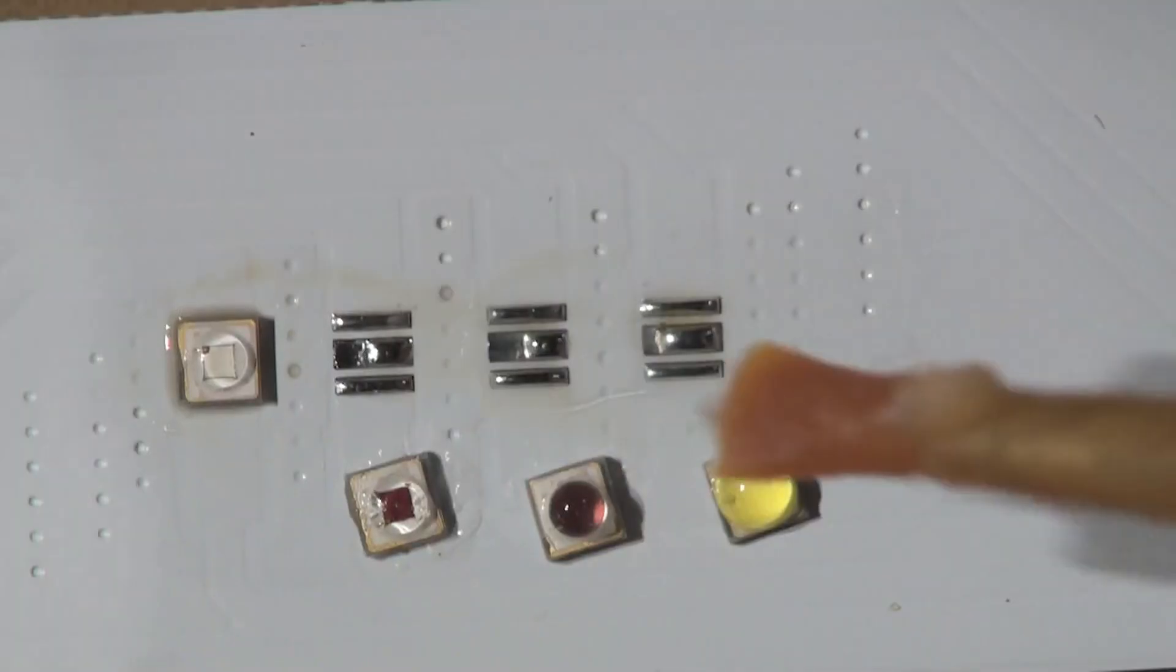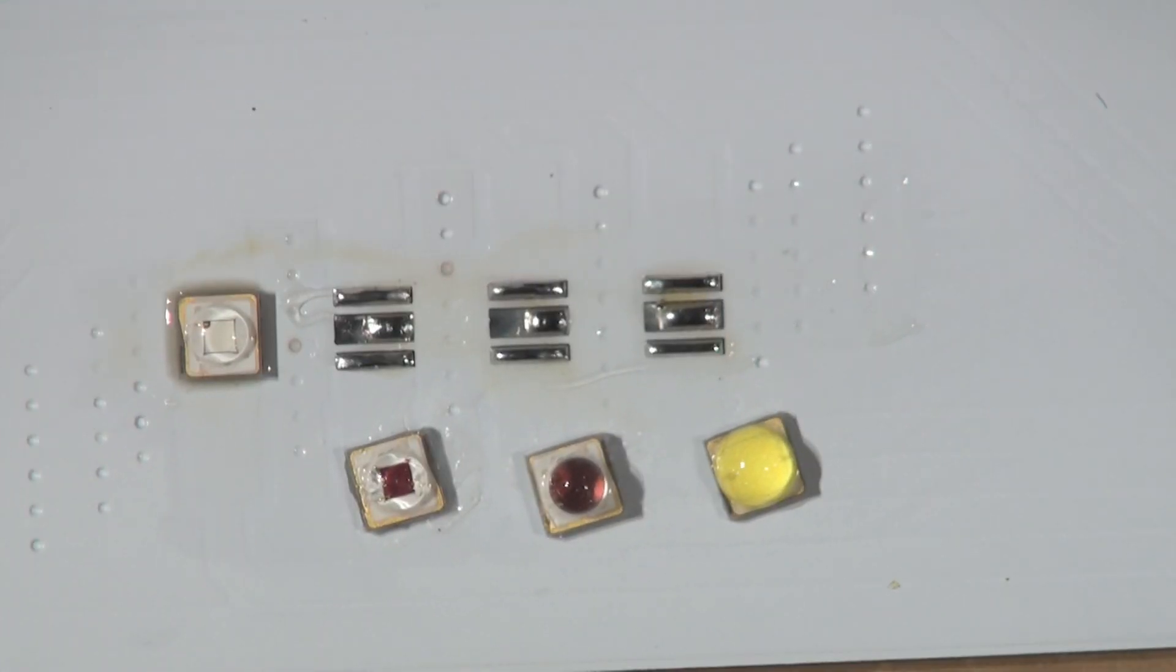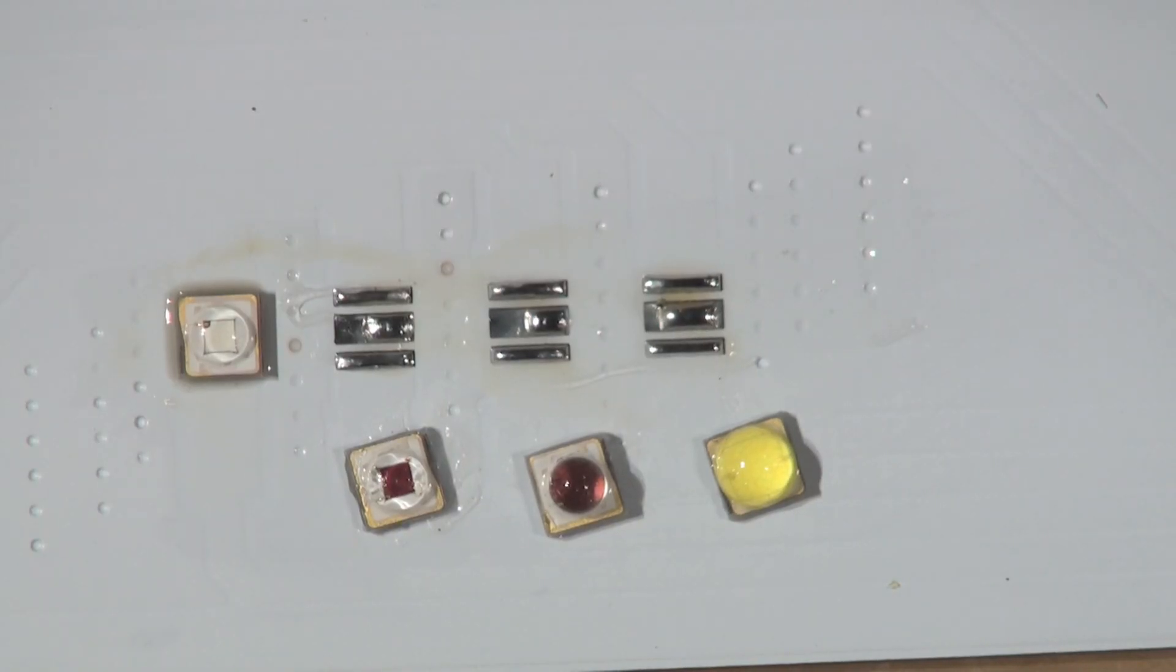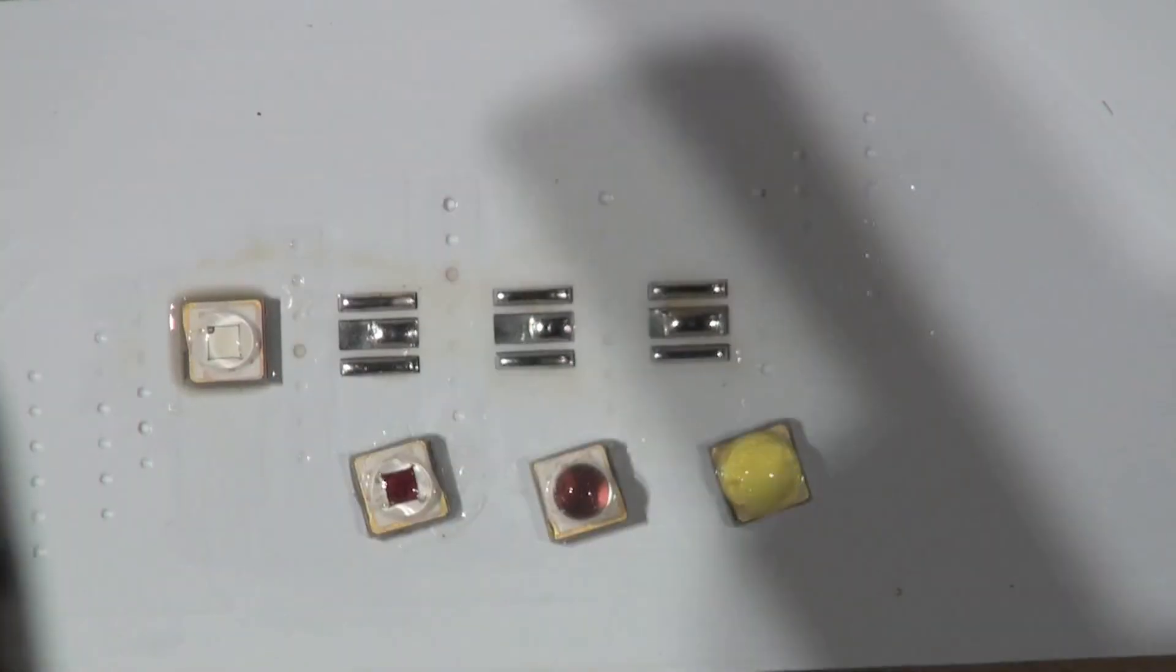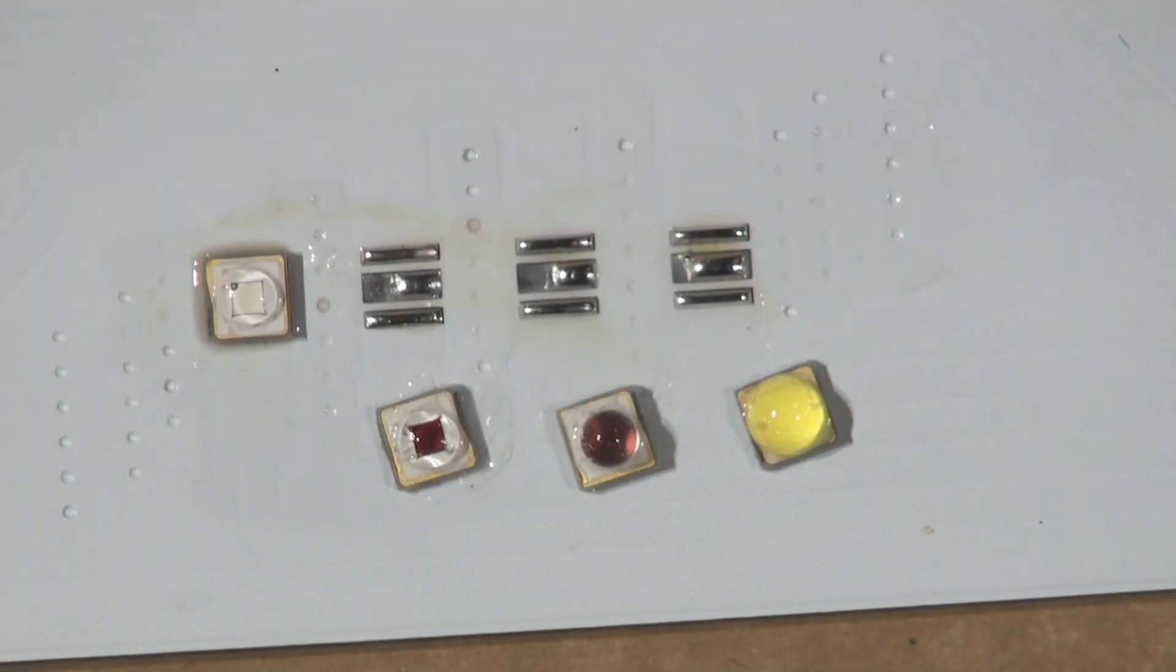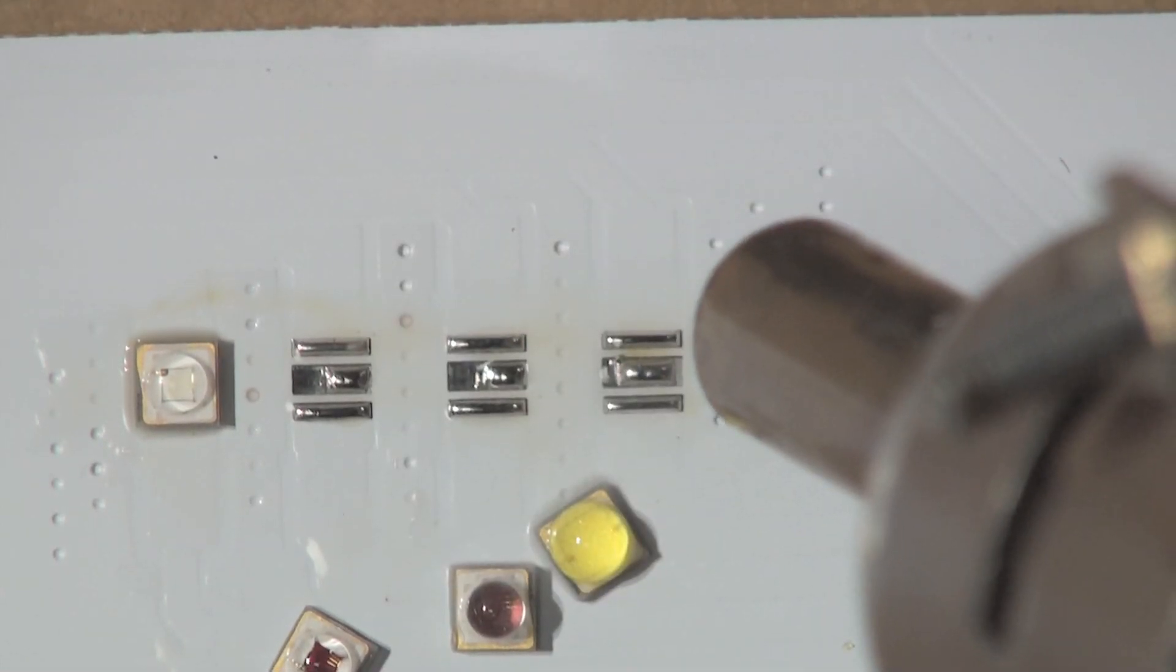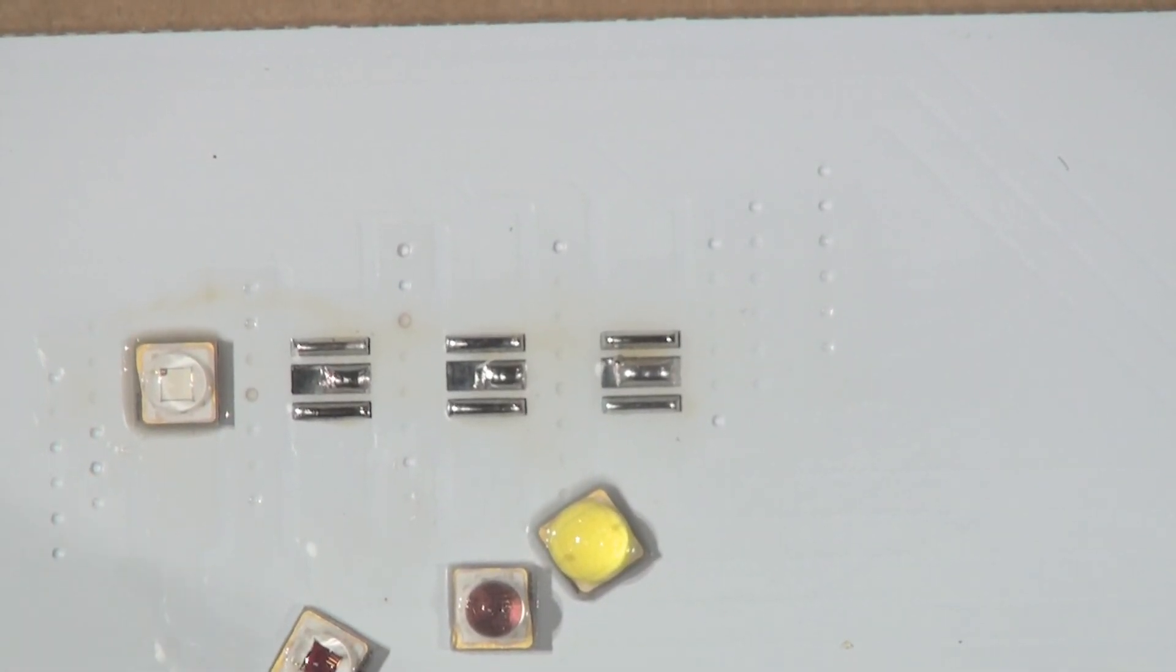It's for a lighting project we're developing, agricultural grow lighting actually. Let's have a go. It's an interesting illustration of how the surface tension of the solder actually helps you position these parts. We're just generally heating the area. All of these LEDs are connected to a heat plane, so it's going to take a little bit of heating.